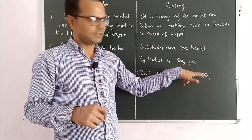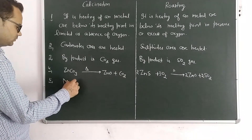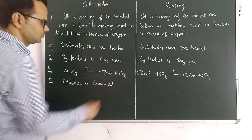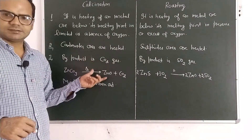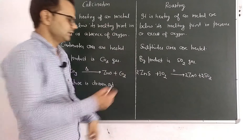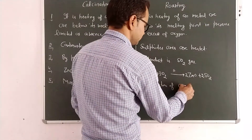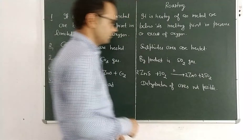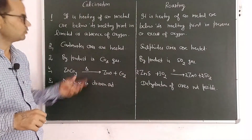The last difference is that in calcination, moisture is driven out. Due to heating, any moisture or water content present escapes into the atmosphere as vapour. In roasting, dehydration of the ore is not possible — there is no driving out of moisture. Moisture is driven out only in calcination.